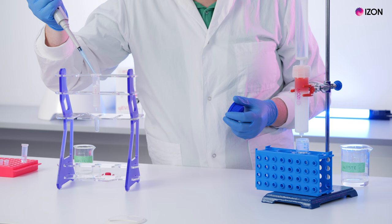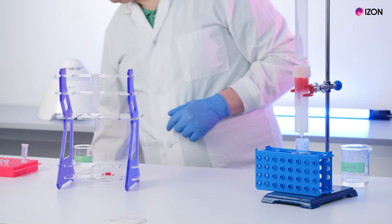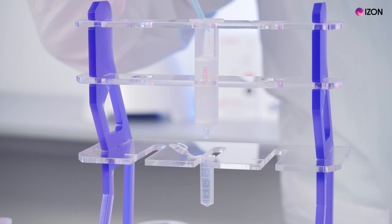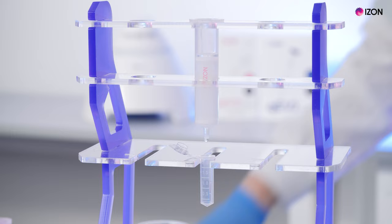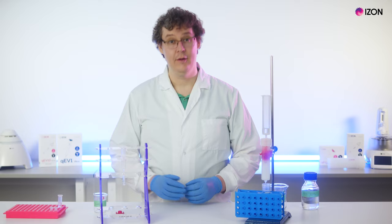For example, if you are collecting individual fractions on the QEV original Gen 2, optimizing for EV purity, then you would add 0.4 milliliters of buffer to the column. Then collect 2 more fractions of 0.4 milliliters each.